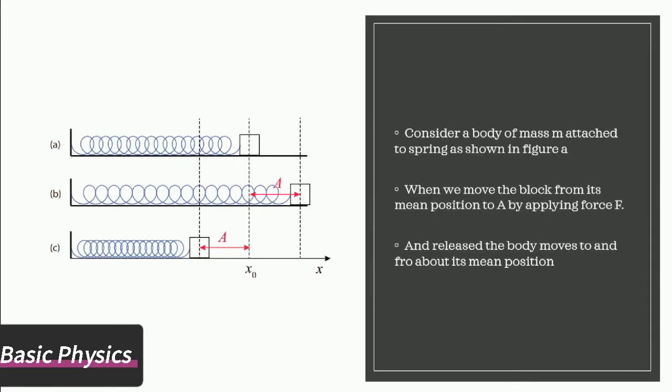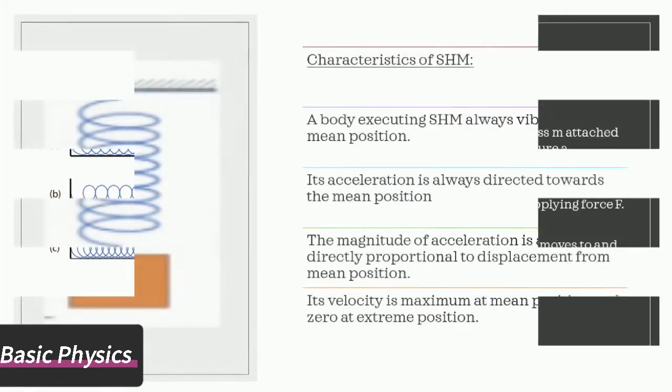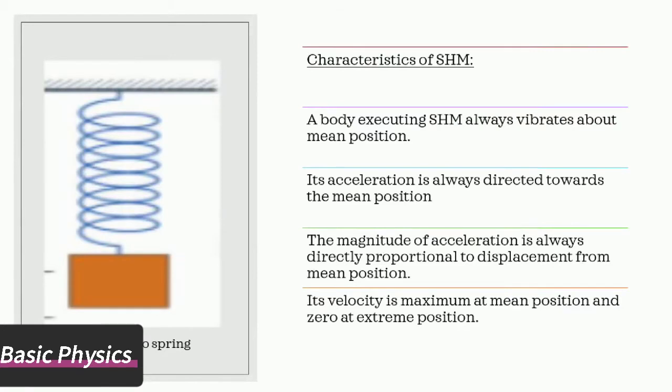Characteristics of simple harmonic motion: A body executing simple harmonic motion always vibrates about mean position. Its acceleration is always directed towards the mean position. The magnitude of acceleration is always directly proportional to displacement from mean position. Its velocity is maximum at mean position and zero at extreme position.